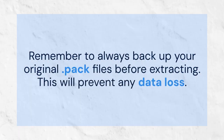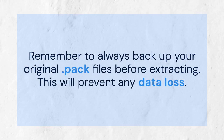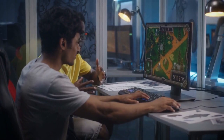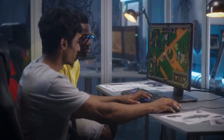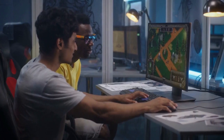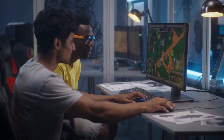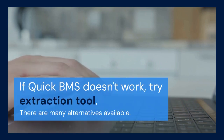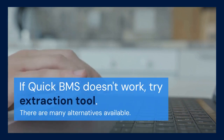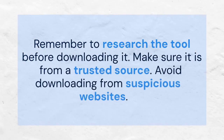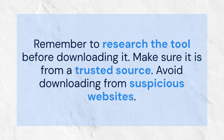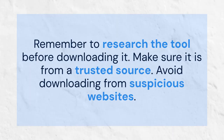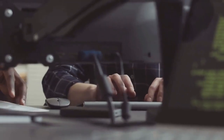Remember to always backup your original .pac files before extracting — this will prevent any data loss. Modifying game files can be tricky, so make sure you understand what you're doing. Be aware that some games prohibit modification of their files; check the game's terms of service before modifying. If QuickBMS doesn't work, try another extraction tool. There are many alternatives available, but research the tool before downloading it, make sure it is from a trusted source, and avoid downloading from suspicious websites, as these might contain viruses or malware.